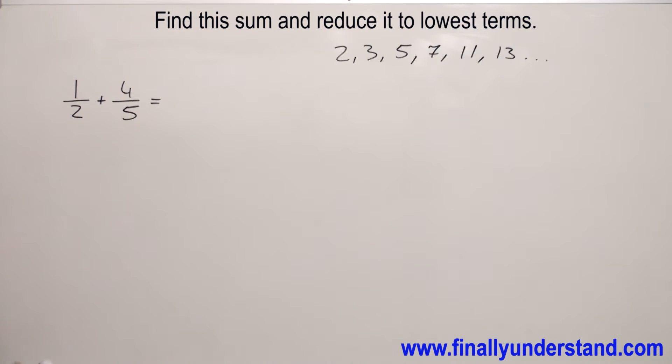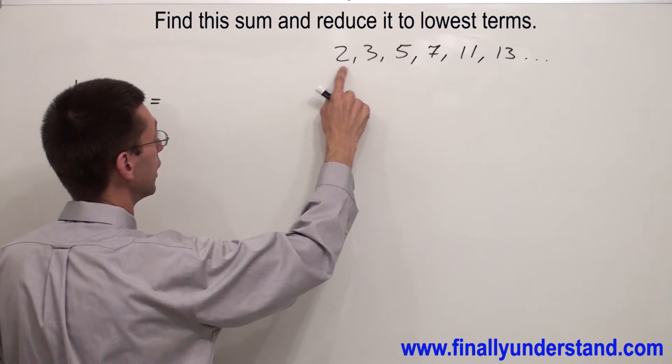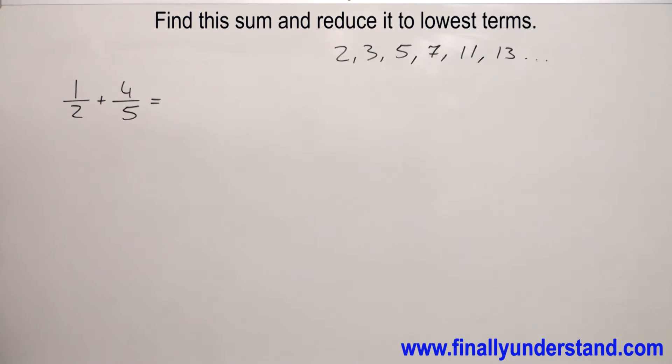Now anytime we have prime numbers in the denominators we have 2 and 5. If you want to find a common denominator simply multiply them together. So I have 1 over 2 and we have 4 over 5. If you want to find LCD, 2 times 5 gives me 10.